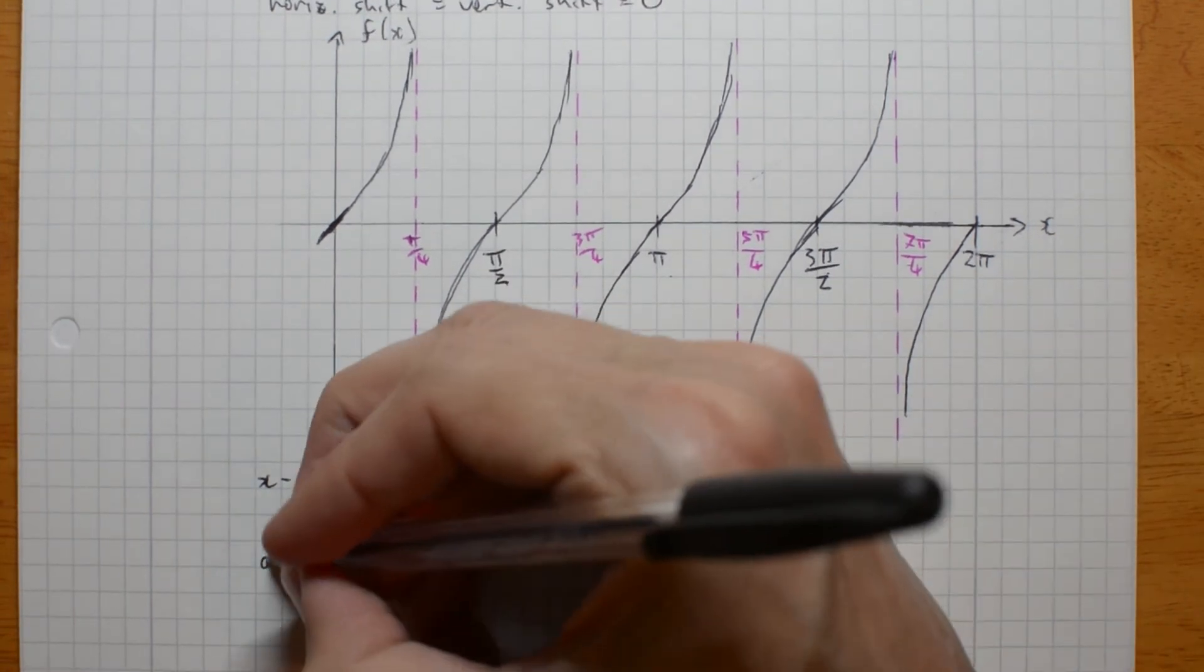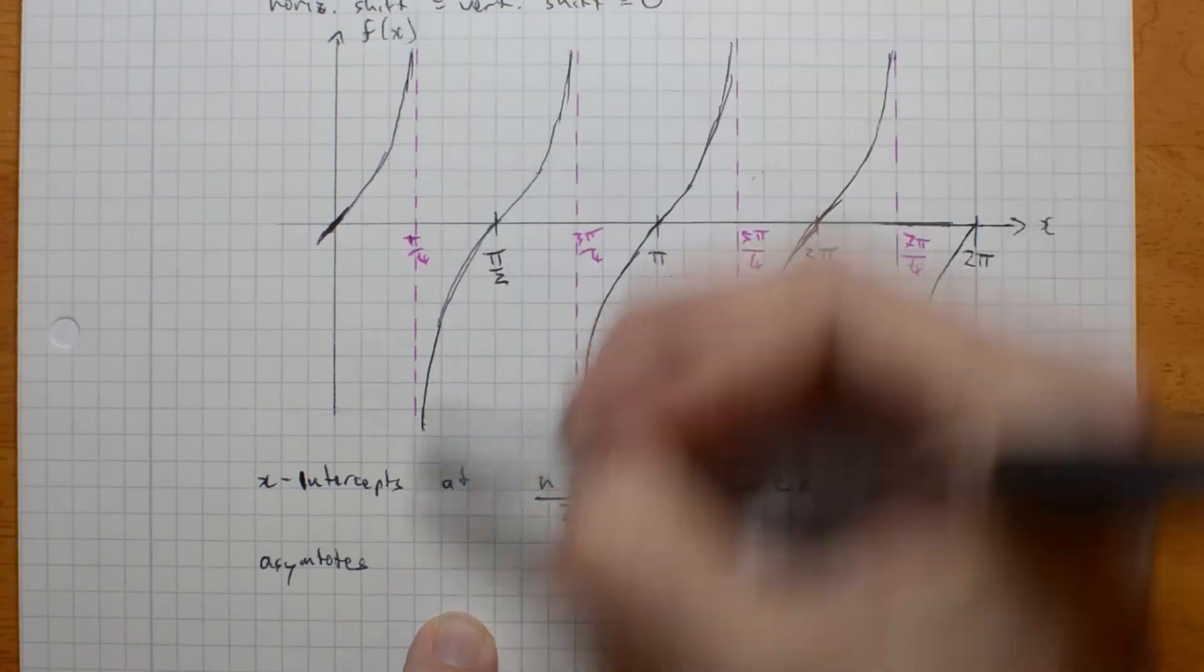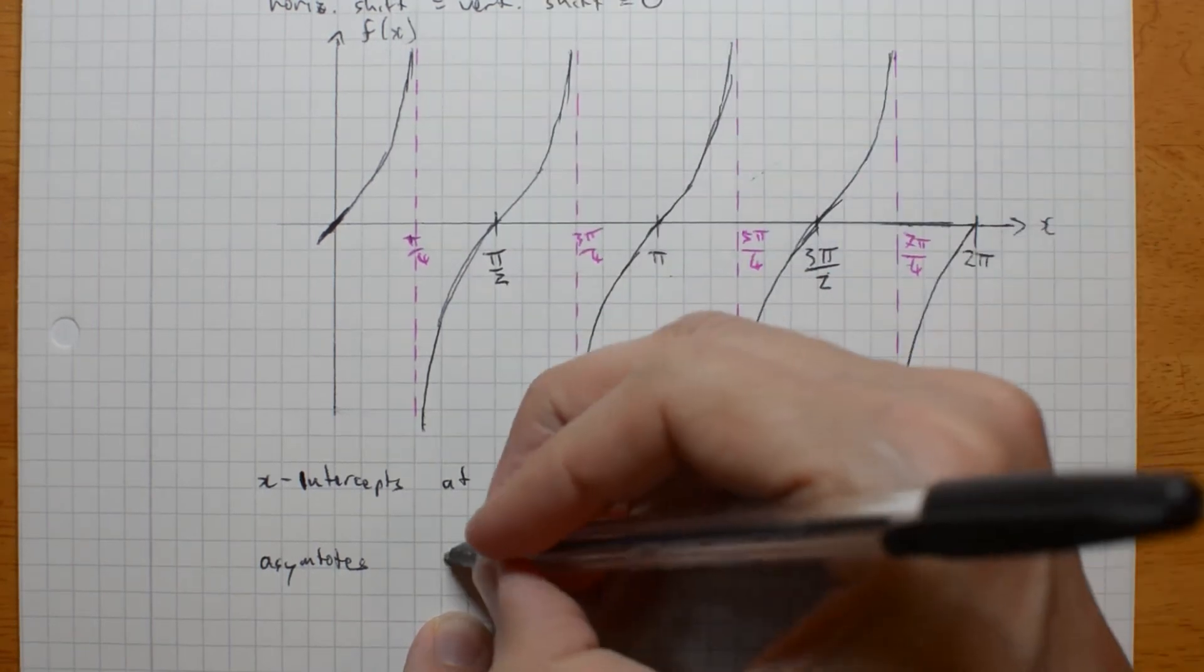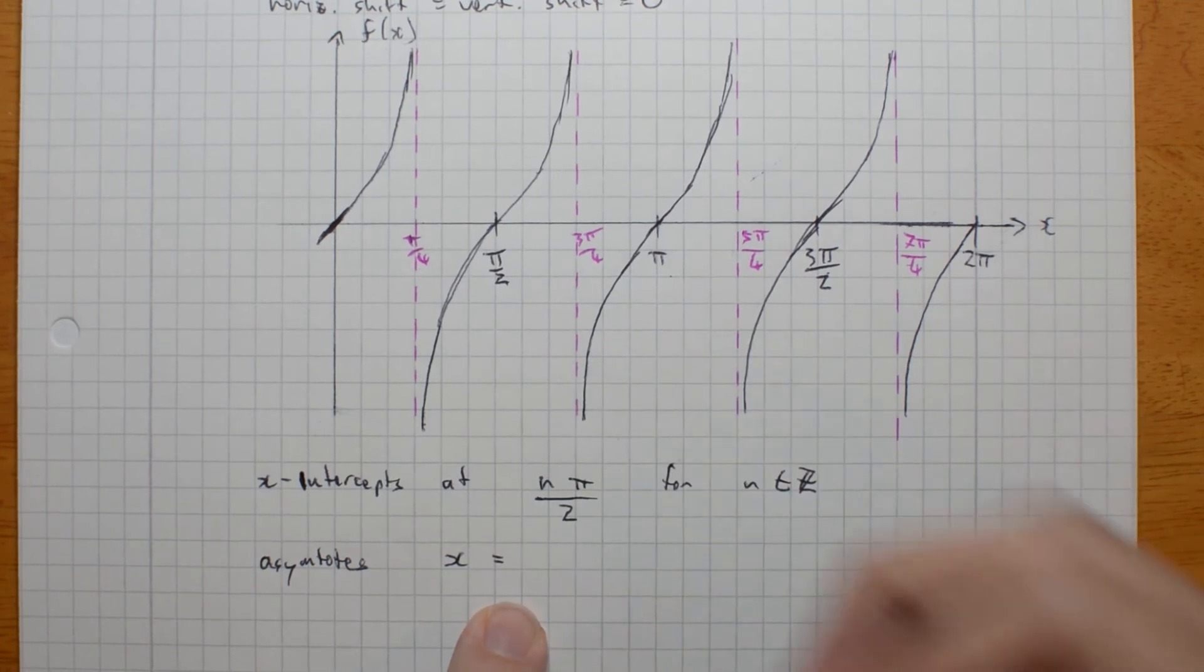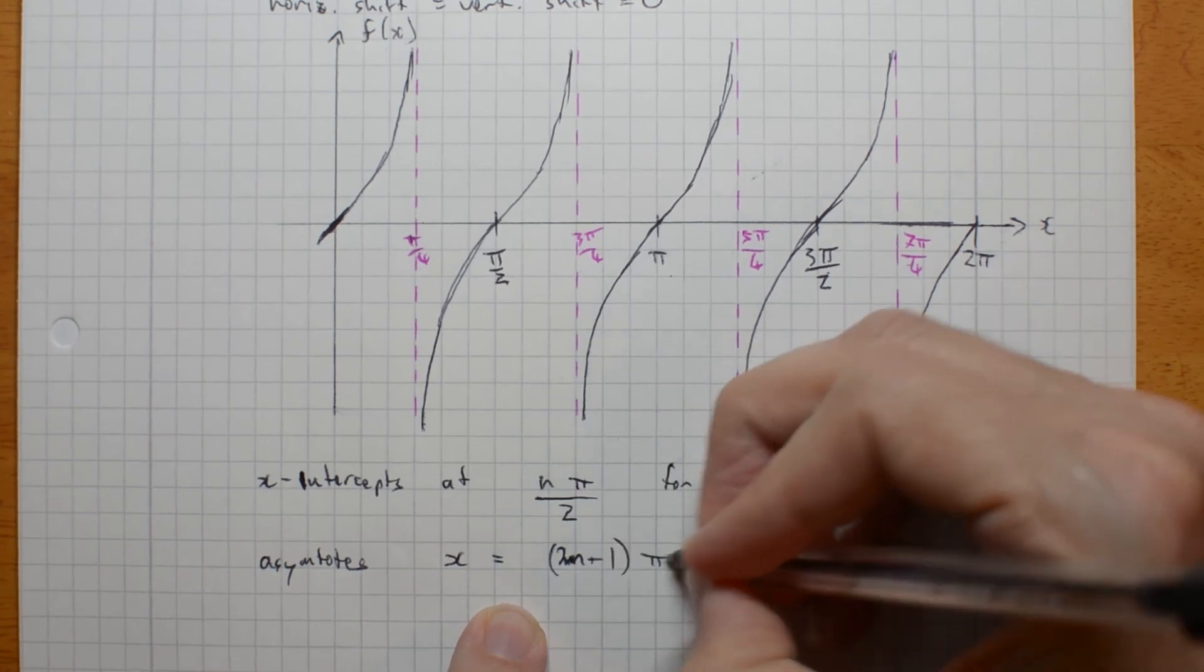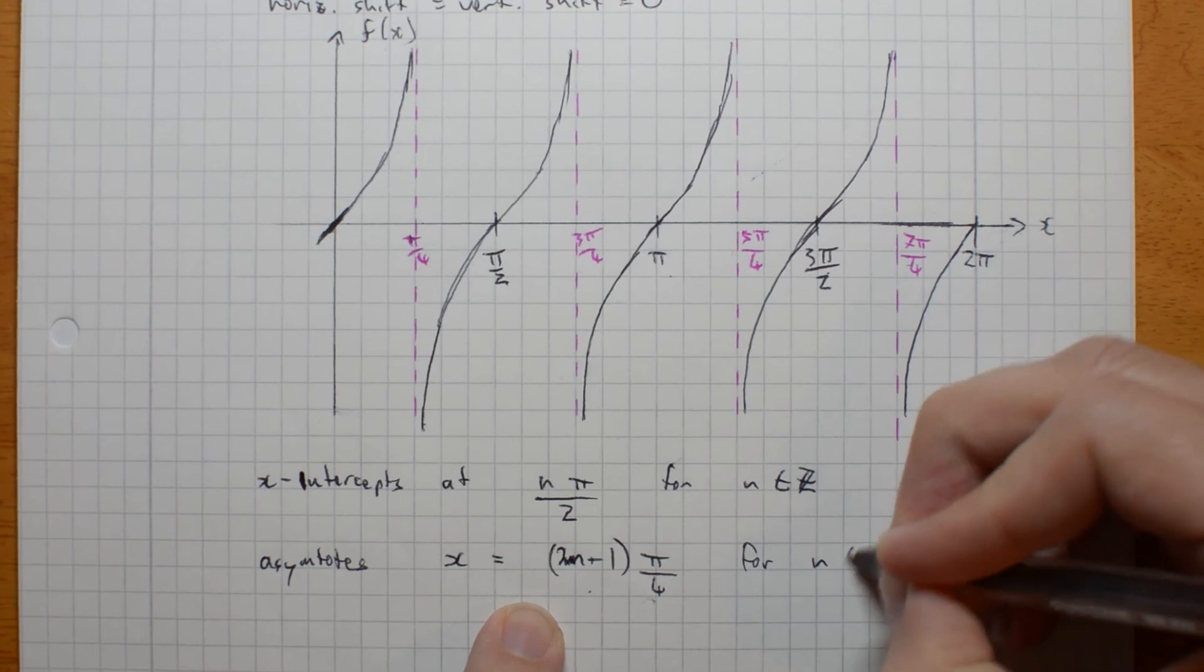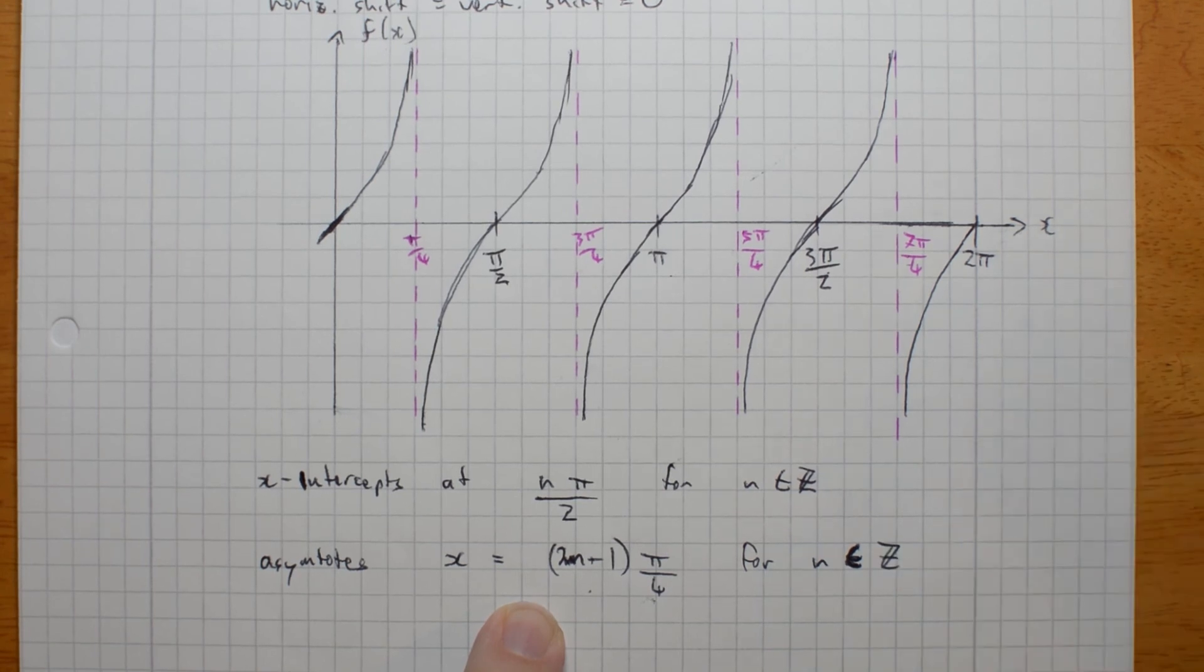What about those asymptotes? The asymptotes are going to be... They're vertical lines, so they're going to be x equals something. And they're going to be at x equals 2n plus 1 pi on 4. An odd multiple of pi on 4. For integers... That was an ugly set membership sign. For integers n. And this gives me these lines at odd multiples of pi on 4. 1, 2, 2, 3, 6.